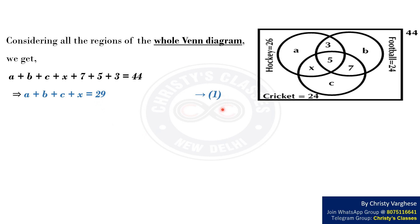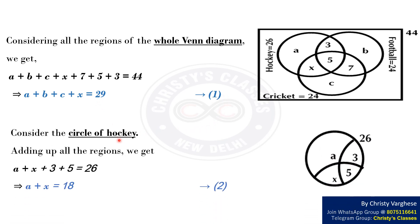Now consider the circle of hockey. Adding up all the regions, we get A plus X plus 3 plus 5 equals 26. This implies that A plus X equals 18. Let this be equation 2.